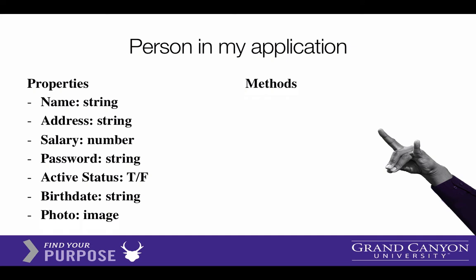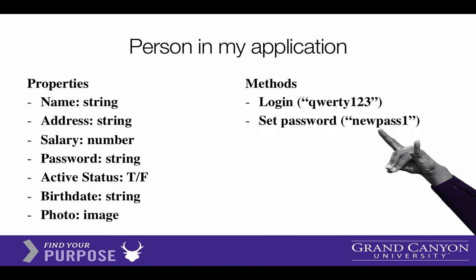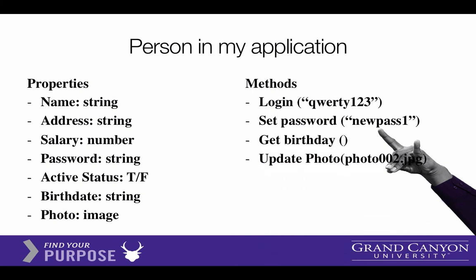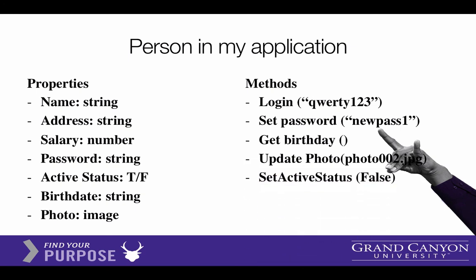But we would have methods that would go along with the program as well. Think of the properties and how we would change them. For instance, somebody attempts a login, and you would have a function, or a method we would call it, as login with a password attempt. And then somebody might have another way to access the properties on the user, and we could create a function called setPassword. And we could have a function like getBirthday, which would return a string of their birthday. We could do updatePhoto and assign a new headshot to this person. We could set their active status to true or false. And so those are some of the properties and methods that you might think of if you had a person object.